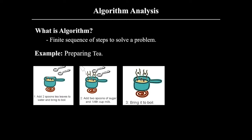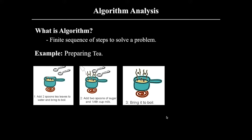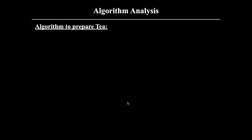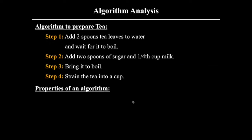In the second step you have to add some amount of sugar and milk as per your requirement and wait for it to boil. That is the third step. In the fourth step you have to filter the tea into a cup. So if you follow these four steps then only you will end up with tea, otherwise you will end up with some other recipe. If you write these four steps in sentence form, that is going to be your algorithm to prepare tea.